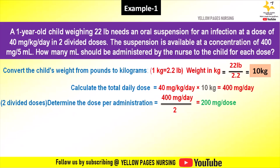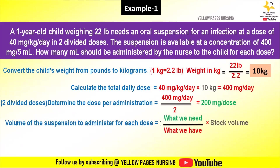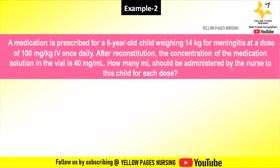The dose we need to give is 200 mg. We then administer the volume using the formula: (what we need ÷ what we have) × stock volume. What we need is 200 mg, what we have is 400 mg, and the stock volume is 5 ml. So: (200 ÷ 400) × 5 ml = 2.5 ml.